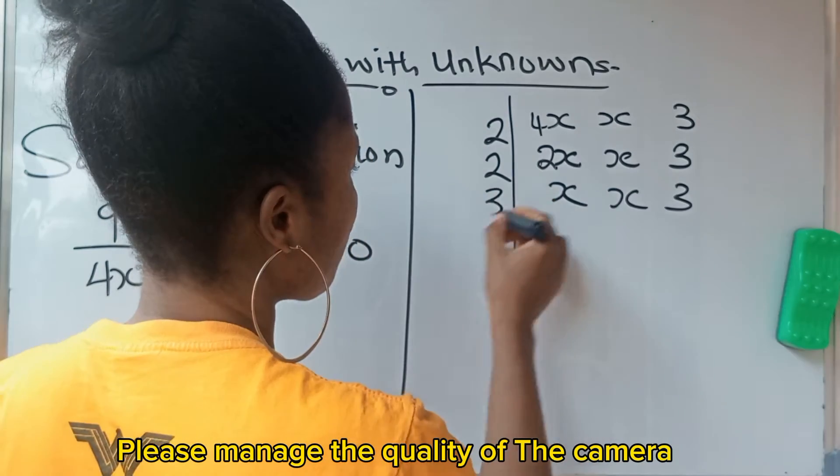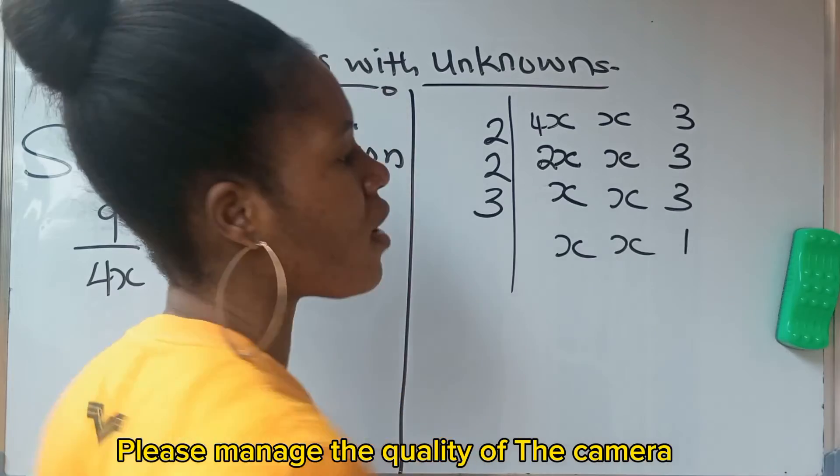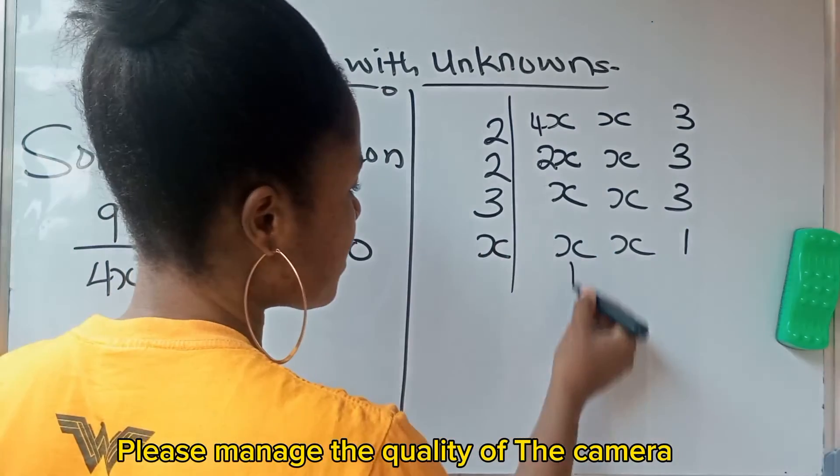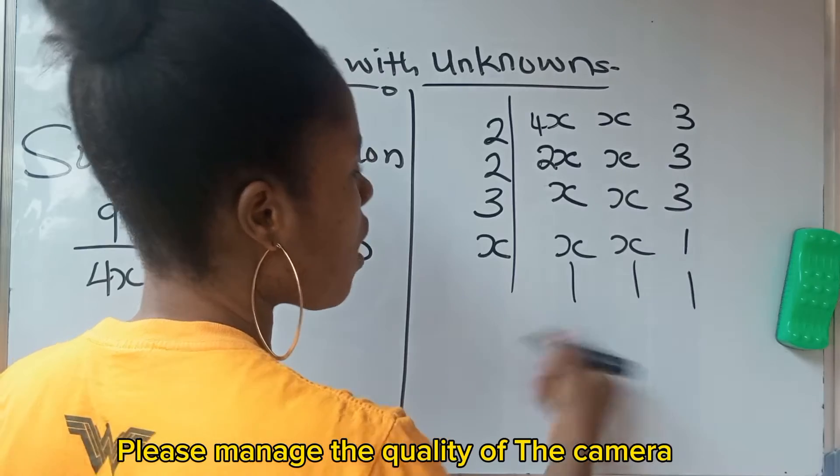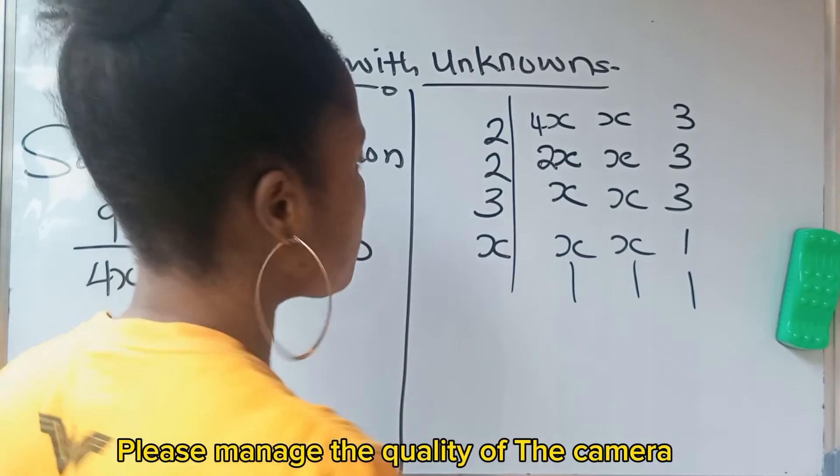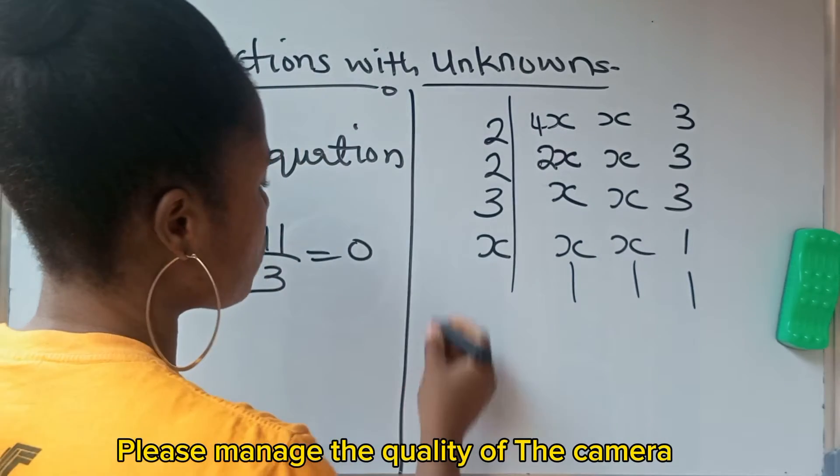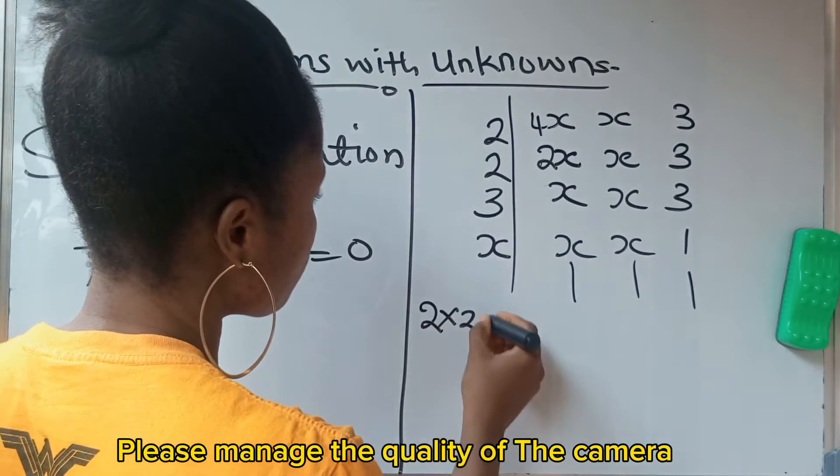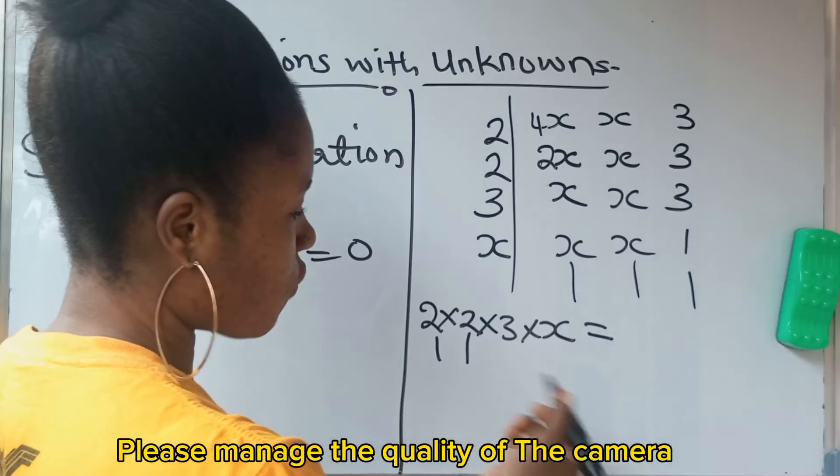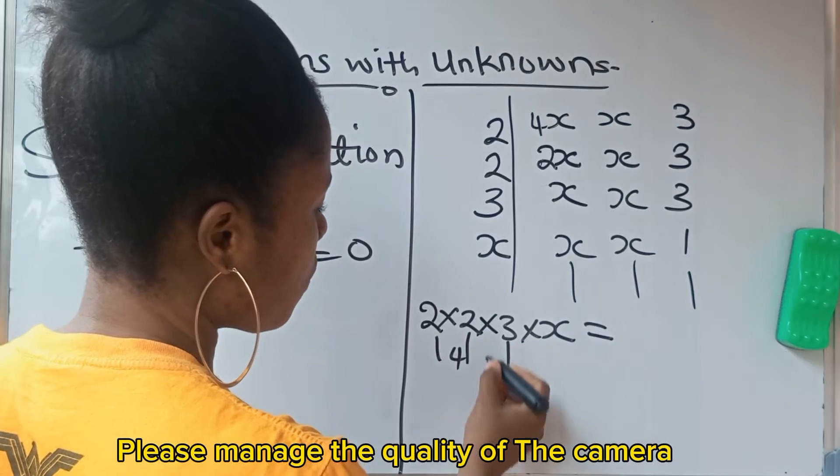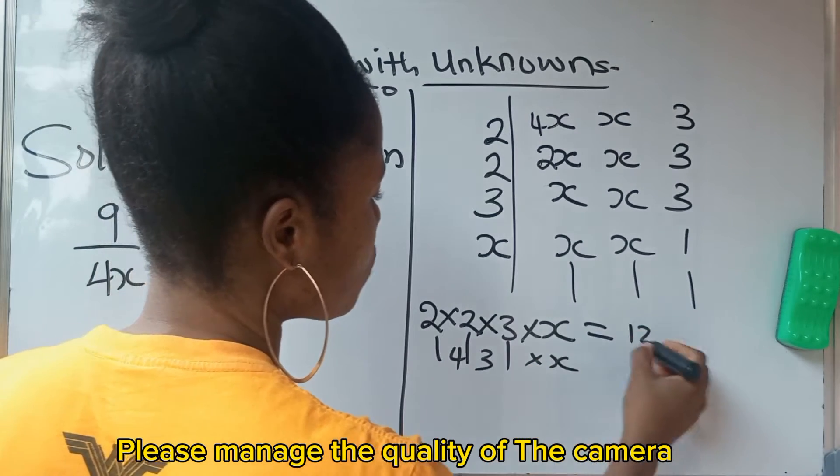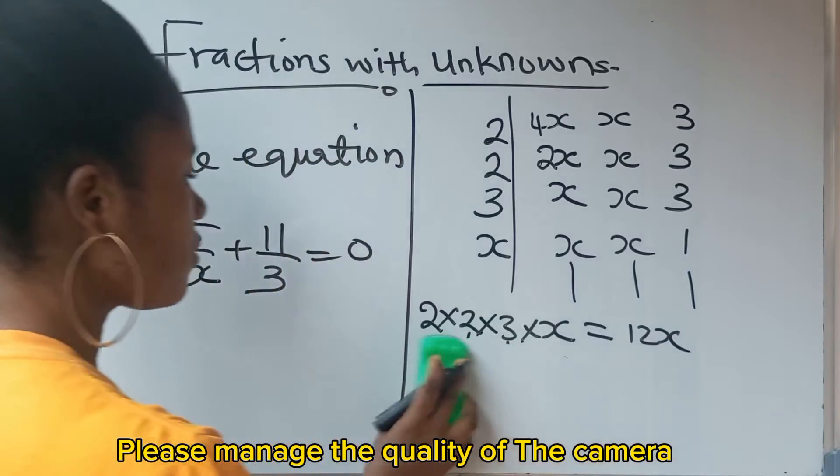So at this point, what can go? 3. When 3 divides here, you still bring down your x, you have 1 here. 3 divide 3 will give you 1. Now what is remaining? x. x divides x, 1, 1. Once you have 1, 1, 1, you are through with your LCM. So what is your LCM? 2 times 2 times 3 times x, which is equal to 4 times 3 gives us 12. 12 times x gives us 12x.